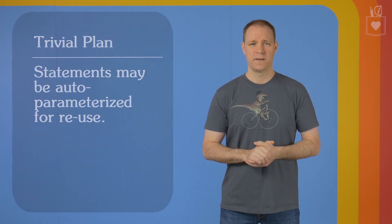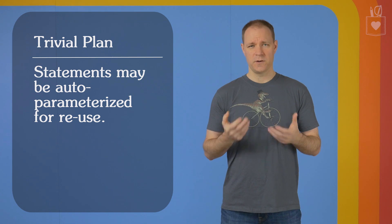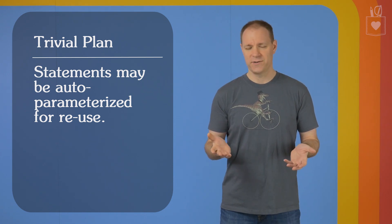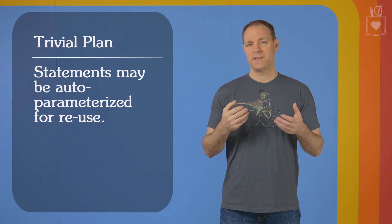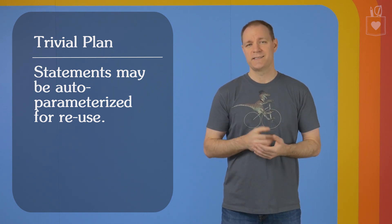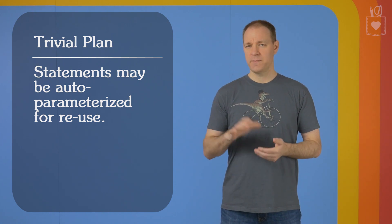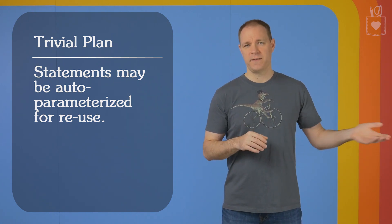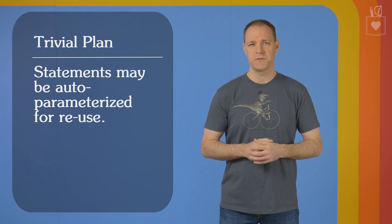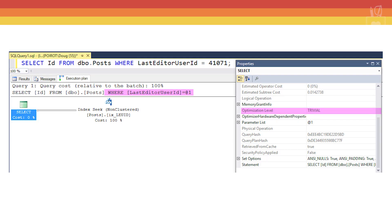And then finally, the last thing that can happen is your statement may be auto-parameterized. When SQL Server goes through the trouble of making this trivial plan, which is not much trouble, it says, you know what, this was so easy, I'm just going to keep this one on standby, it's not going to take up much room. So that way, if this statement gets passed in again, I'll just grab this plan that I've got sitting here waiting to be reused. In order to do that, it's going to take literal values like, say, last editor userid equals 41071 and parameterize it and turn it into last editor userid equals at p1.